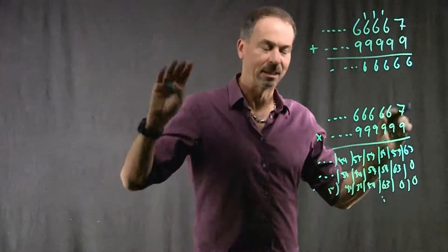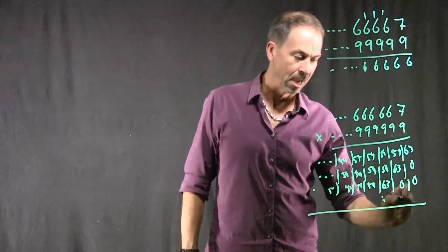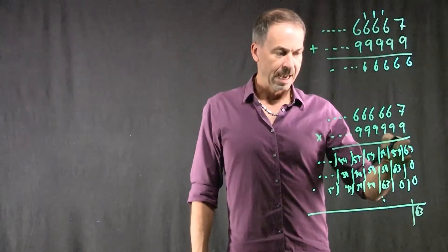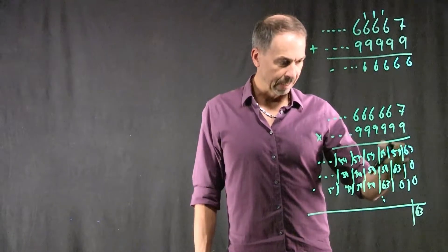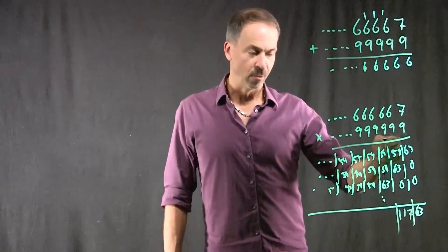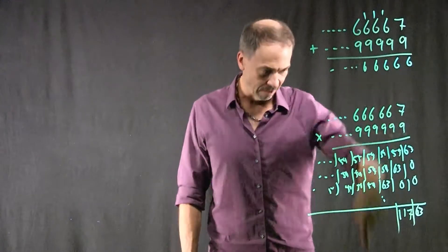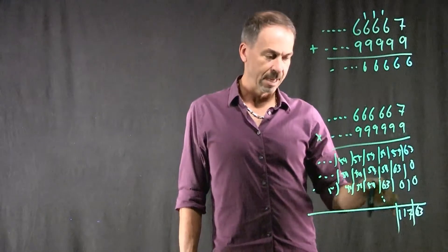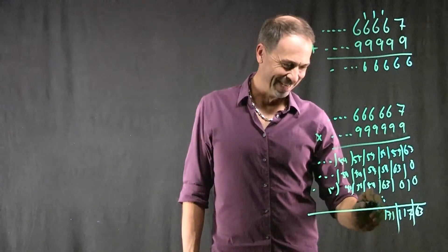My handwriting's completely scrawly, but let's see if we can figure this out. 63 units. 54 tens, 63 tens, 0 tens thereafter — that's 117 tens. Then 54 hundreds, 54 hundreds, 63 hundreds, 0 hundreds — so that's 171 hundreds, and so on.